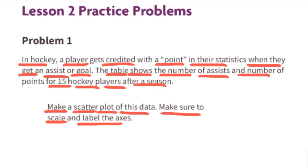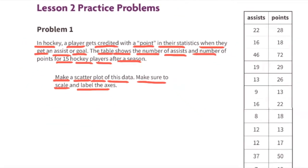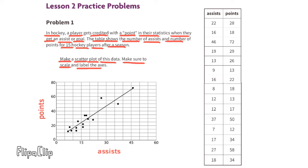Make a scatter plot of this data. Make sure to scale and label the axes. Here you can see the scatter plot. The horizontal axis represents the assists and the vertical axis represents the points awarded. Both the assists and the points are displayed in five unit increments.